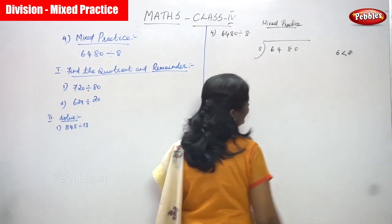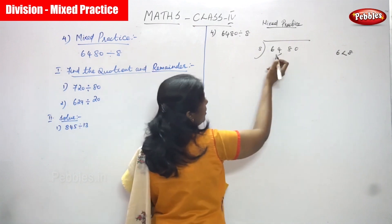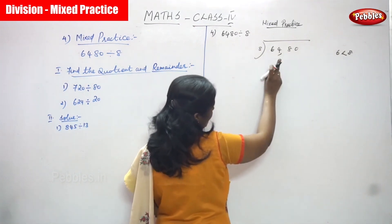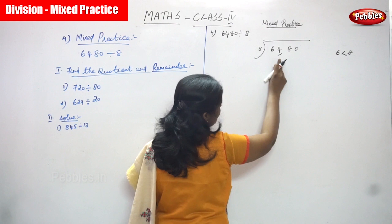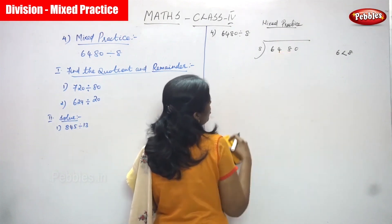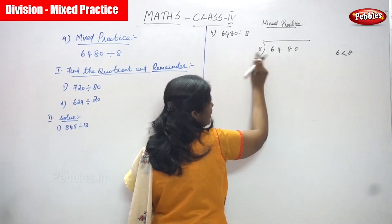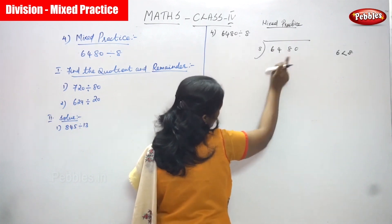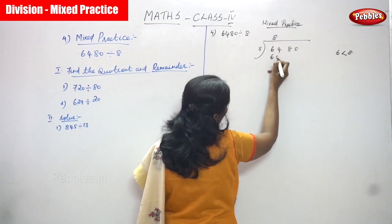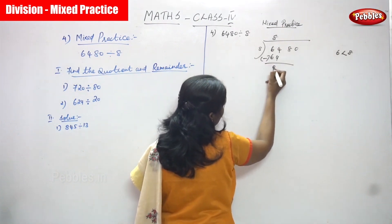6 is lesser than 8, so you have to go to the next digit, that is 4 — the 100s place value. The number at the 100s place value is 4. So you have to take 64. In 64, 8 goes how many times? That is 8 eights are 64. So you have to subtract and you can get 0.